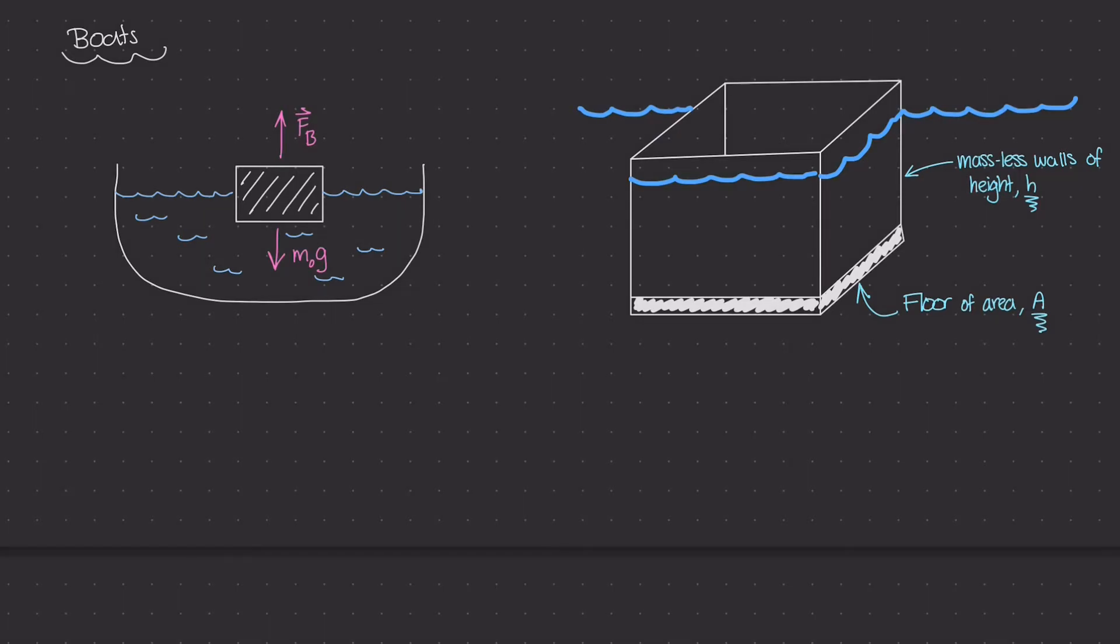Now again, for simple objects like this wooden block in this body of water, we had some sort of buoyant force that was equal to the weight of the object. The object had to displace enough water so that the weight of the water could match the weight of the object. That was essentially this buoyant force pushing up, keeping this entire system in static equilibrium.